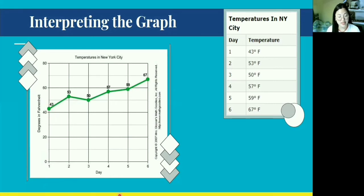For the trend of the data, we cannot say that when one variable increases, the other also increases. Why? Because on the third day of the data, the temperature decreased. From the second day, from 53 degrees Fahrenheit, it went down to 50 degrees Fahrenheit.